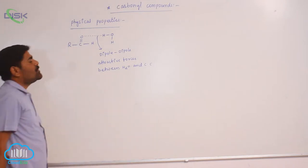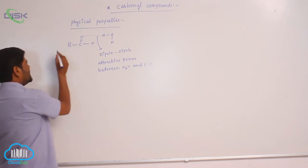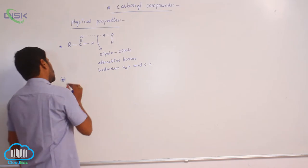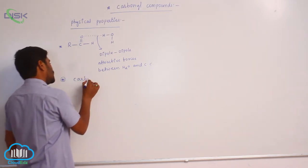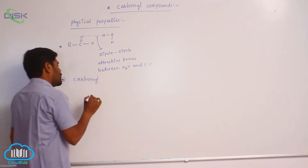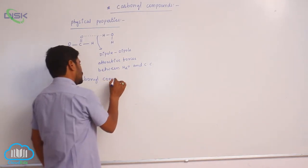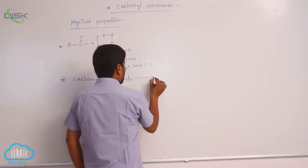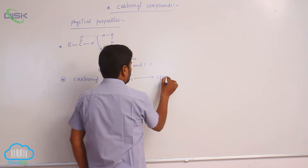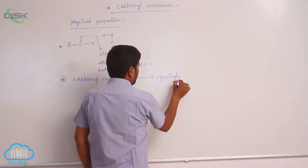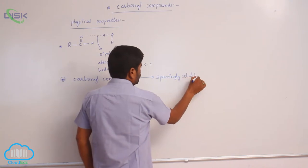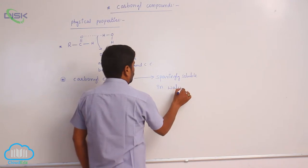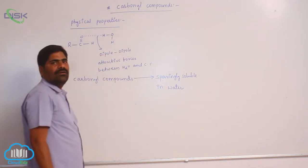Which compound? C=O means carbonyl compound. That is the reason why carbonyl compounds are sparingly soluble, especially lower members, in a polar solvent like water.